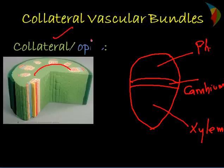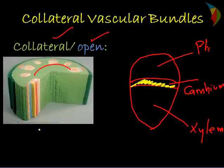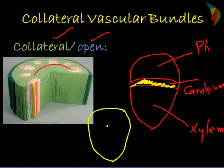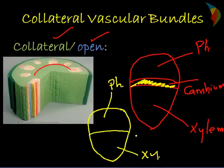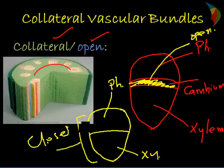There is another distinction: the open type. When the tissue has the presence of a cambium layer, it is called the open type. In the case of the closed type, if you see the cross section, there is no cambium layer — this is phloem and this is xylem. So the presence of cambium layer defines the open type, and its absence defines the closed type. These are the two types of collateral vascular bundles: open type and closed type.